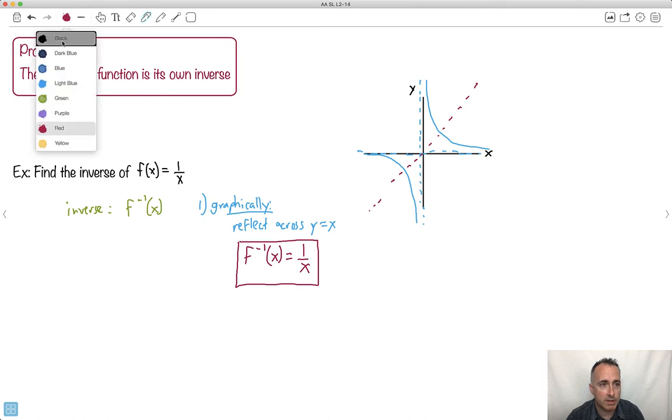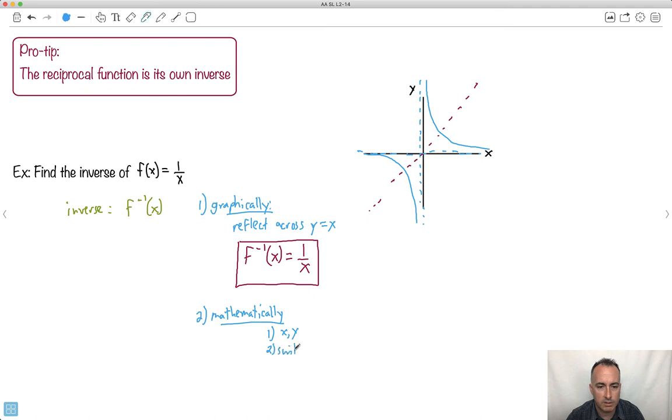We could also do it mathematically if we wanted. Remember what we do mathematically? We have a couple steps to do. Remember, we go first, we write with x's and y's. Then we switch x and y. And then we solve for y.